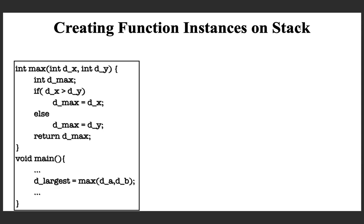Here there is a program with two functions: main and max, both user-defined. Max is used to find the maximum of two integers, and main uses that max function to find the largest of two integers a and b. This is a very simple example. The purpose is to understand how function instances are created on the stack.